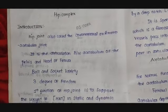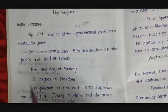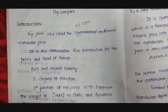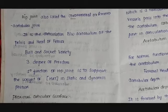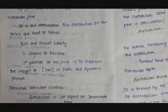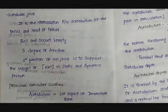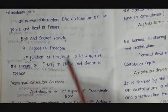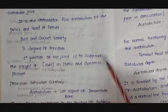Introduction. Hip joint is also called as coxofemoral or tibiofemoral joint. The pelvic bone is also known as os coxa, hence the hip joint is called the coxofemoral joint. Hip joint is basically an articulation between the acetabulum of the pelvis and head of femur, and it comes under the ball and socket variety. As ball and socket is triplanar in nature, the hip joint has three degrees of freedom: flexion, extension, abduction, adduction, medial rotation, and lateral rotation. The primary function of the hip joint is to support the weight of the head, arm, and trunk in static as well as dynamic posture.